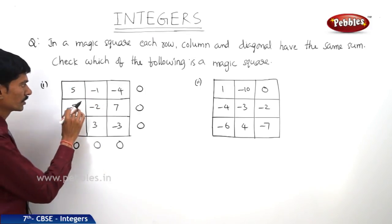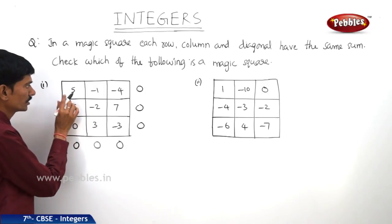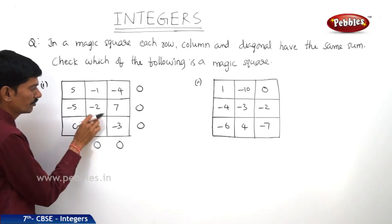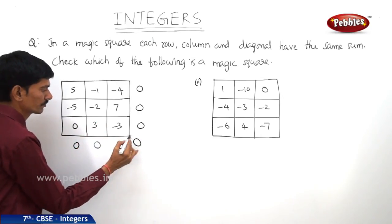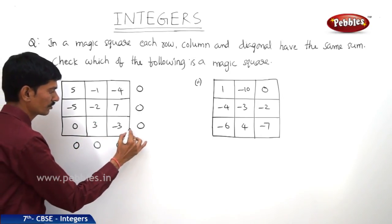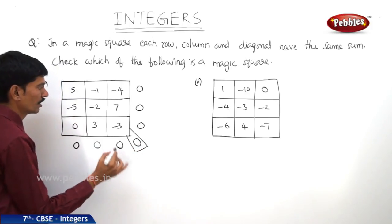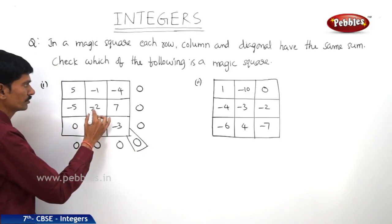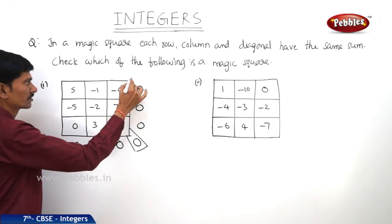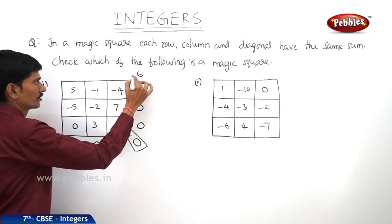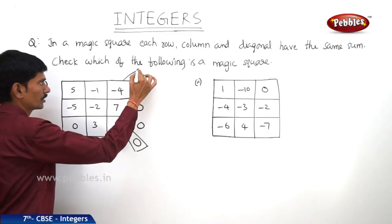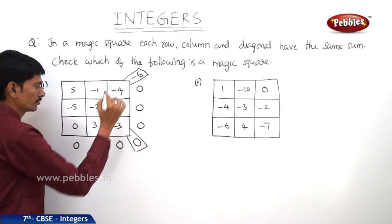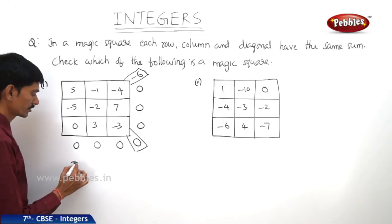Now let us check the two diagonals. In the first diagonal, 5 minus 2 is 3, and 3 minus 3 is 0. So in the diagonal also, the sum of the numbers is 0. And in the second diagonal, minus 2 minus 4 is minus 6. So in the second diagonal we have got a different result, that is minus 6. So it is not a magic square.